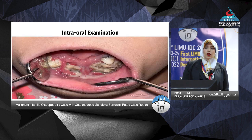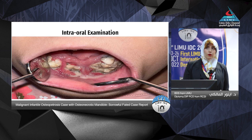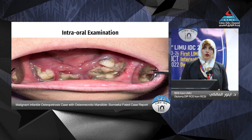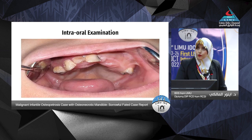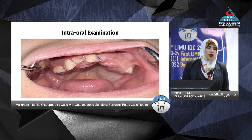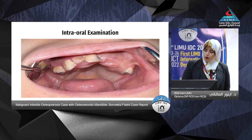Intraoral examination revealed the mandibular bone to be almost totally necrotic. Most teeth had failed to erupt due to osteonecrosis. The only erupted tooth was the lower canine, which had significant decay. The patient reported no pain from the tooth. On the lateral view, necrosis involved the whole body of the mandible. The maxilla showed multiple missing teeth due to failure of eruption from the osteopetrosis.